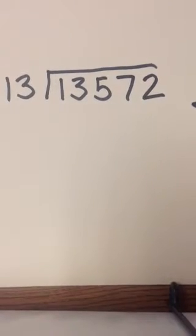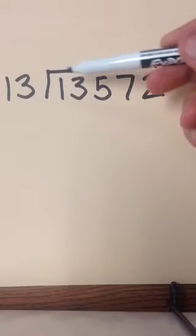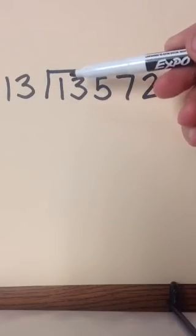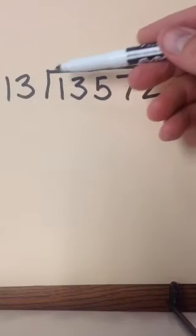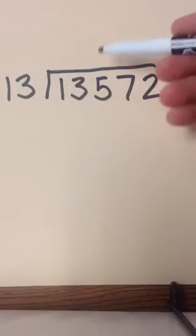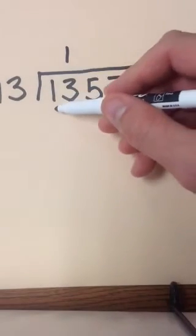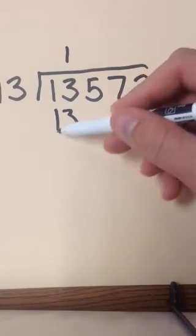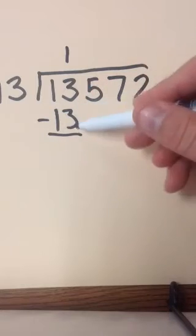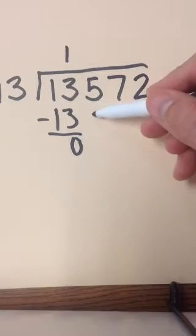The first step is to see if 13 can go into this first digit, which it cannot, so we have to move on to the second. 13 will go into 13 one time. 13 times 1 is 13. I find the difference. There is nothing left over.